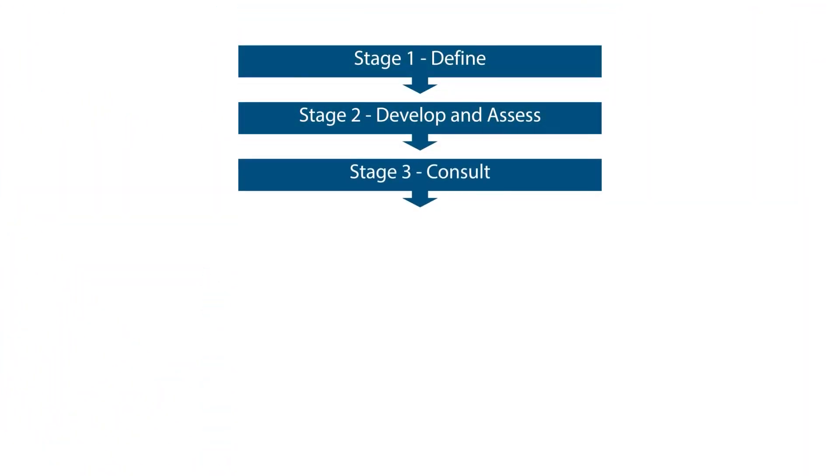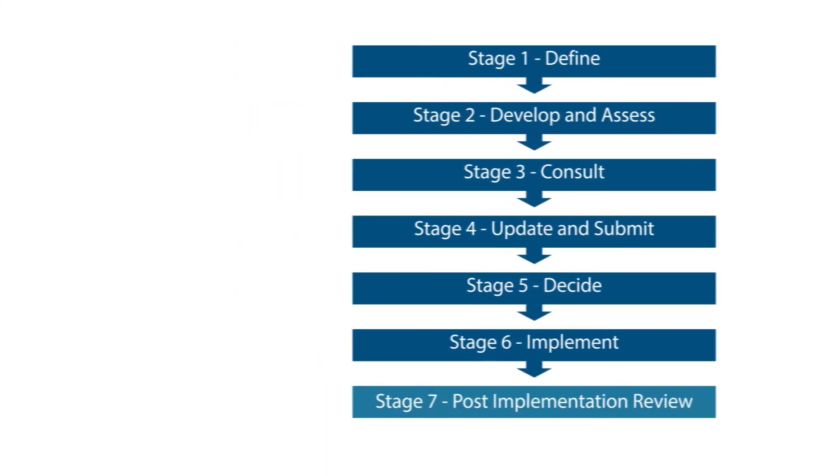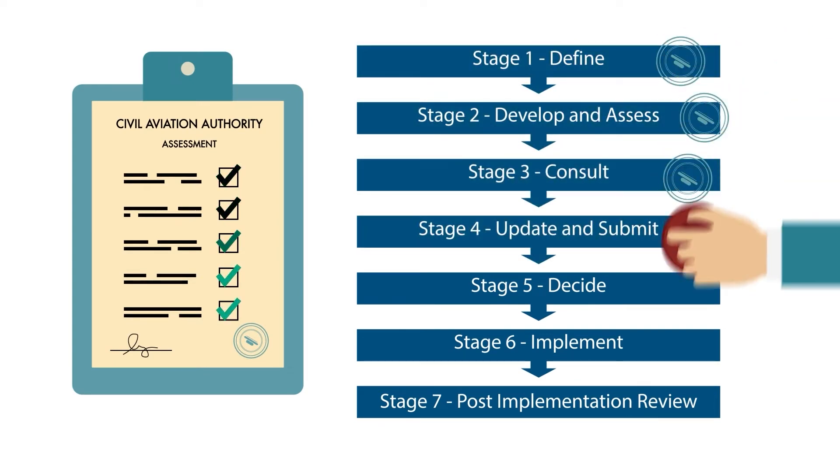The government has outlined a seven-stage process for airspace change that airports must follow, with the Civil Aviation Authority, or CAA, assessing the work completed at the end of each stage.